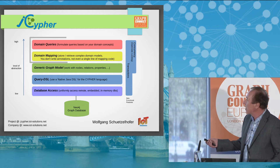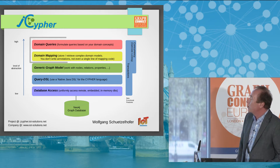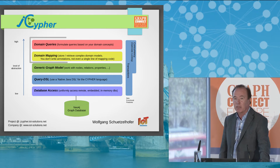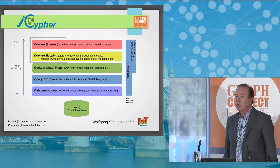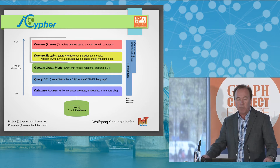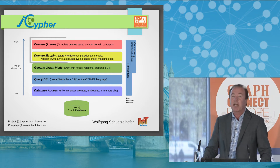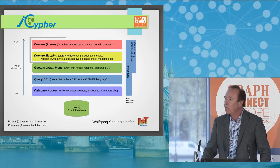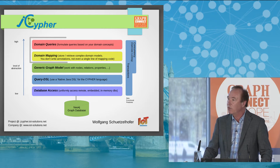In addition, jCypher provides some non-functional features like transactions and concurrency support — concurrency support for multiple clients accessing one database, as well as for multi-threaded access from within one client.